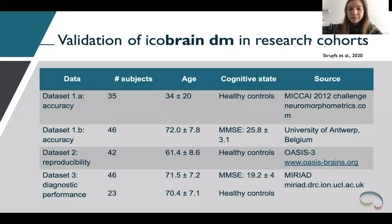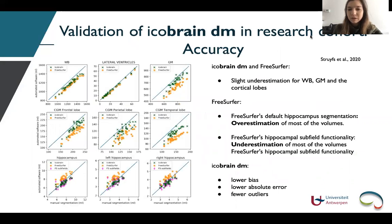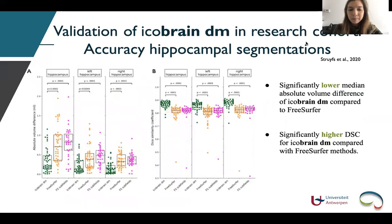To validate IcoBrainDM in terms of accuracy, reproducibility, and diagnostic performance, and compare this to other automated tools such as FreeSurfer, a study was performed with four carefully curated research datasets. T1-weighted images were utilized as input and brain segmentation and volumes as output. When looking at the results, we could see that there was a slight undersegmentation for whole brain, gray matter, and the cortical lobes from both tools. FreeSurfer's default hippocampus segmentation overestimated most of the volumes, while FreeSurfer's hippocampus subfield functionality underestimated most of them. Overall, IcoBrainDM had a lower bias, a lower absolute error, as well as fewer outliers. When looking more closely at hippocampus segmentation accuracy, there was a significantly lower median absolute volume difference and a significantly higher Dice similarity coefficient for IcoBrainDM compared to FreeSurfer methods.